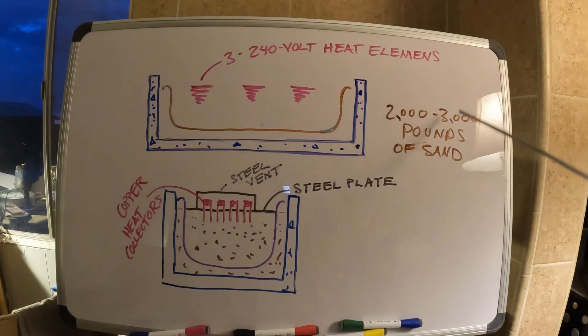I've calculated at least 2,000 to 3,000 pounds of sand. So I'm going to use three coils—three of the 240-volt heat elements that I've been using.